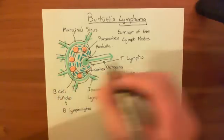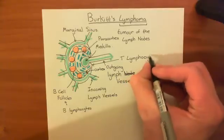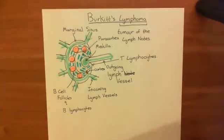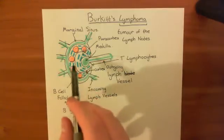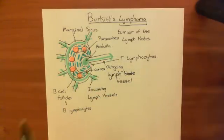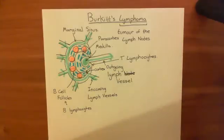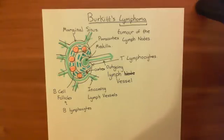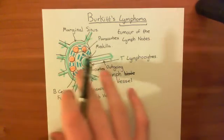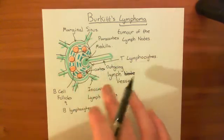In order for the lymph to go from the marginal sinus to the medulla and then out the outgoing lymph vessel, it has to percolate through all of these B-lymphocytes and T-lymphocytes. Anything nasty in this lymph is going to set off an immune response — that's the purpose of these lymph nodes. They are a guard, basically; they are looking for trouble, and anything coming through here they're going to spot if it's nasty.